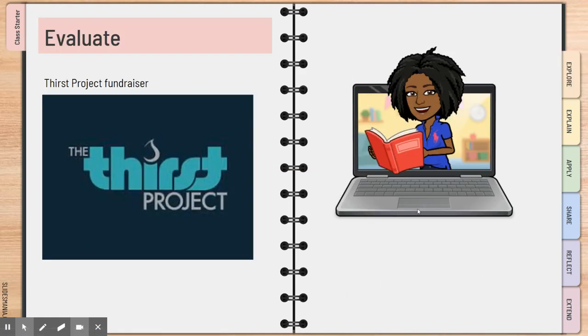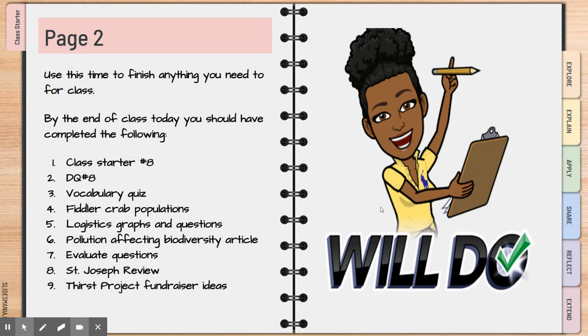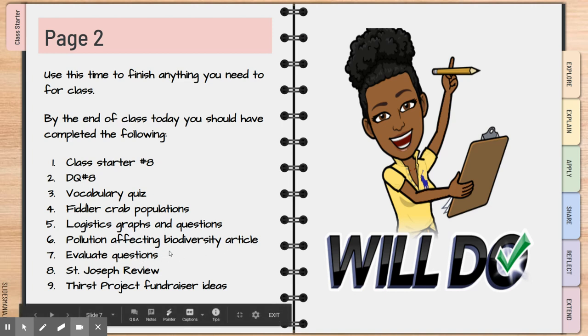We'll talk about our Thirst Project fundraiser today. And then by the end of class, you'll have completed class starter eight, daily quiz eight, vocabulary tests, fiddler crab populations, logistics graph, pollution affecting biodiversity article, evaluate questions, and then we'll review over St. Joseph.